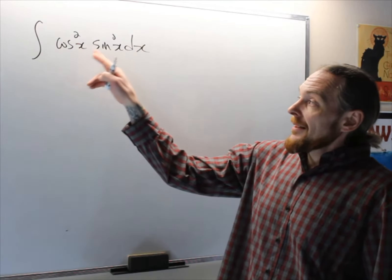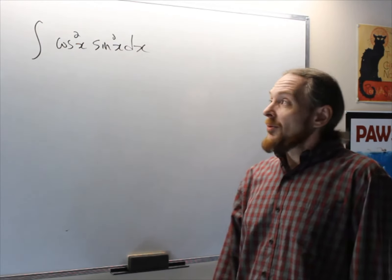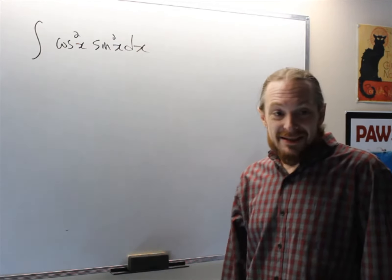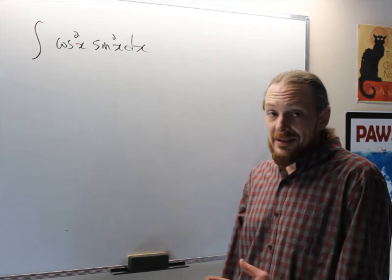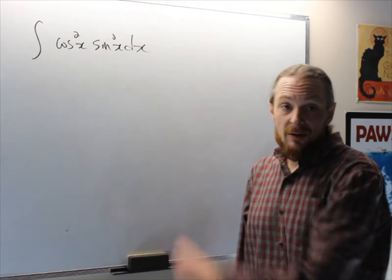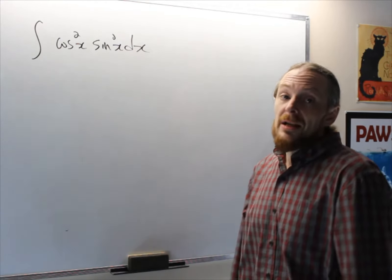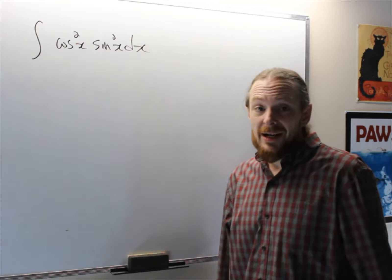This is a sine and cos product, and what we have is even power. So this is the dangerous case where we have to pay attention and we can't use the technique where we have at least one odd power of these and steal the differential. This time, what we're going to use is another trigonometric identity.